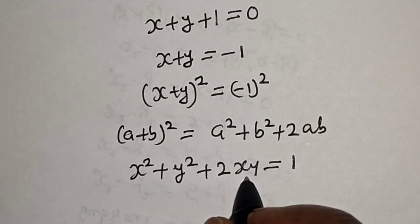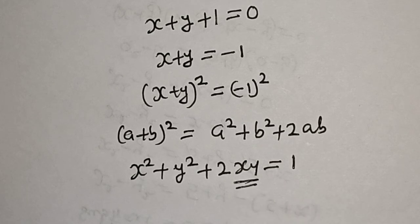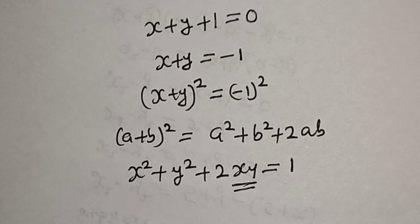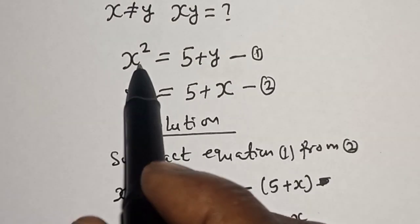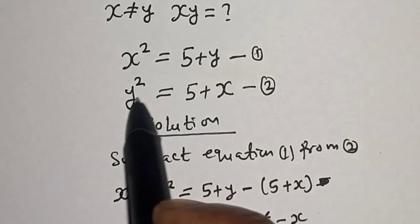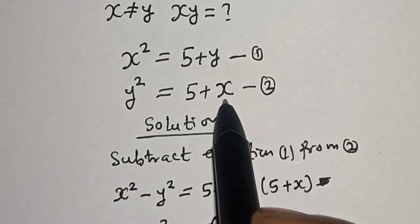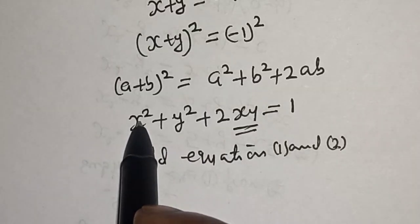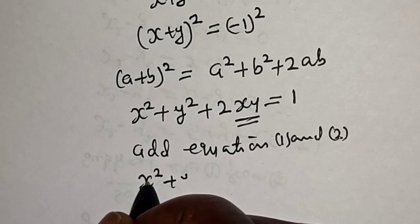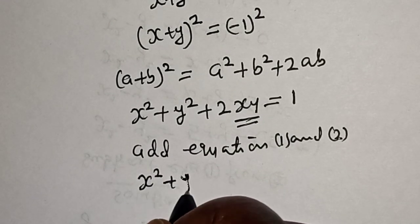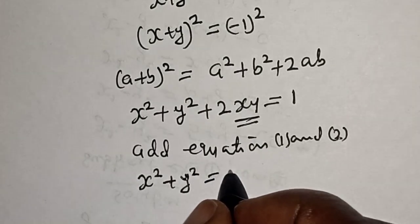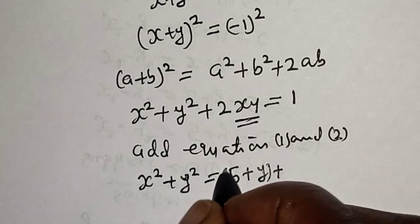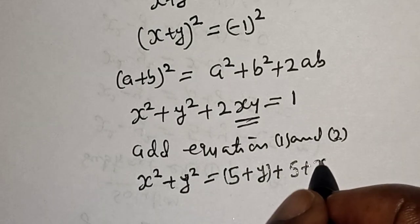Now we are looking for the value of sy, but we do know the value of s square plus y square. Equation 1 is s square equals 5 plus y, and equation 2 is y square equals 5 plus s. Adding equations 1 and 2 together to get s square plus y square: s square plus y square is equal to 5 plus y plus 5 plus s, which equals 10 plus s plus y.